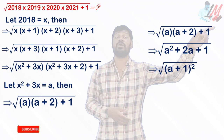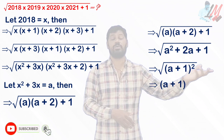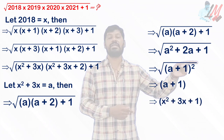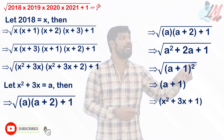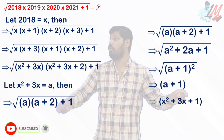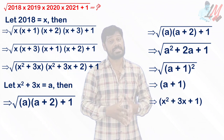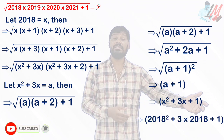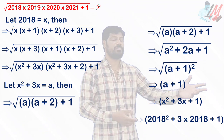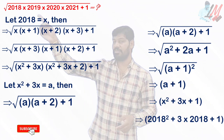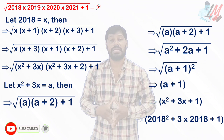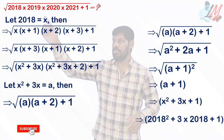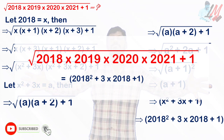So the square root of (A+1)² is simply A+1. Now replacing A back with x²+3x, we get x²+3x+1. And replacing x with 2018, the final answer is 2018²+3×2018+1, which is the value of the entire original expression: square root of 2018×2019×2020×2021 + 1.